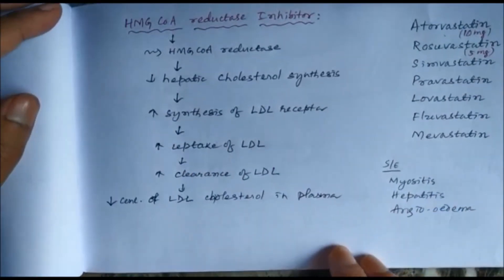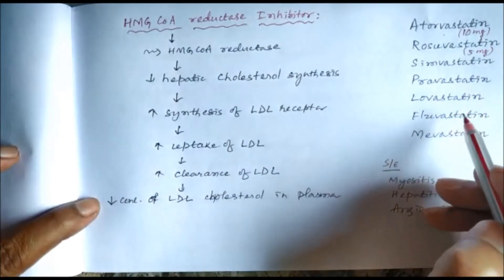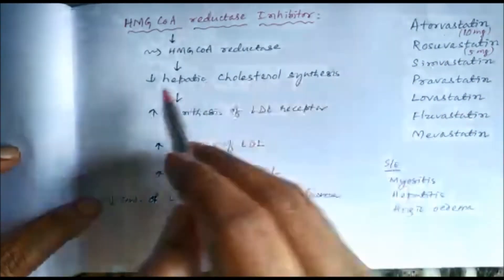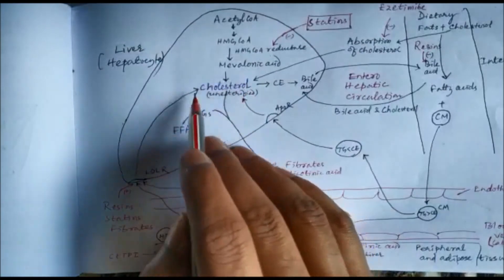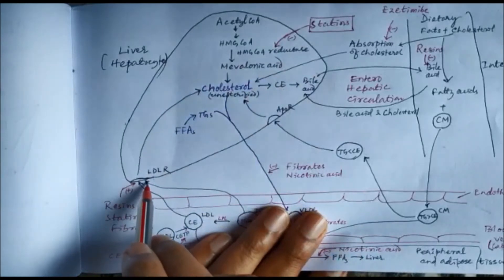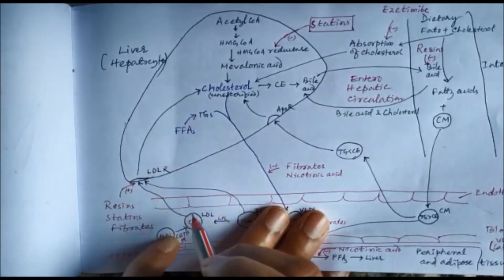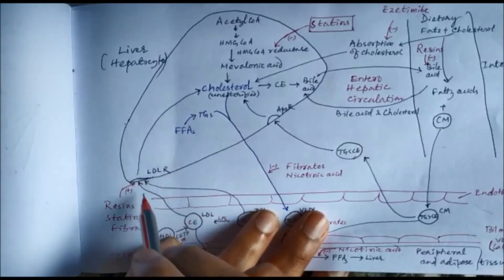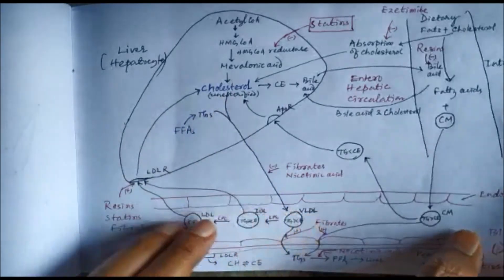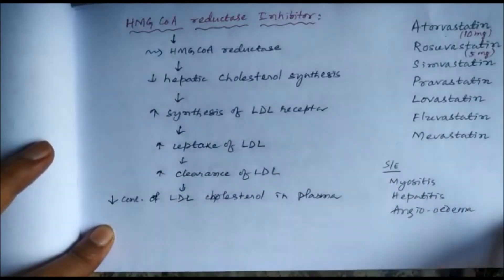HMG coenzyme A reductase inhibitors — the statins: atorvastatin, rosuvastatin, simvastatin, pravastatin, lovastatin, fluvastatin, mevastatin. They inhibit HMG coenzyme A reductase, causing a decrease in cholesterol synthesis. Because of decreased cholesterol synthesis in hepatocytes, there will be increased expression of LDL receptors so that cholesterol can be obtained from another source. Increased LDL receptor expression increases LDL uptake, so LDL cholesterol decreases in the blood. Side effects include myositis, hepatitis, and angioedema.